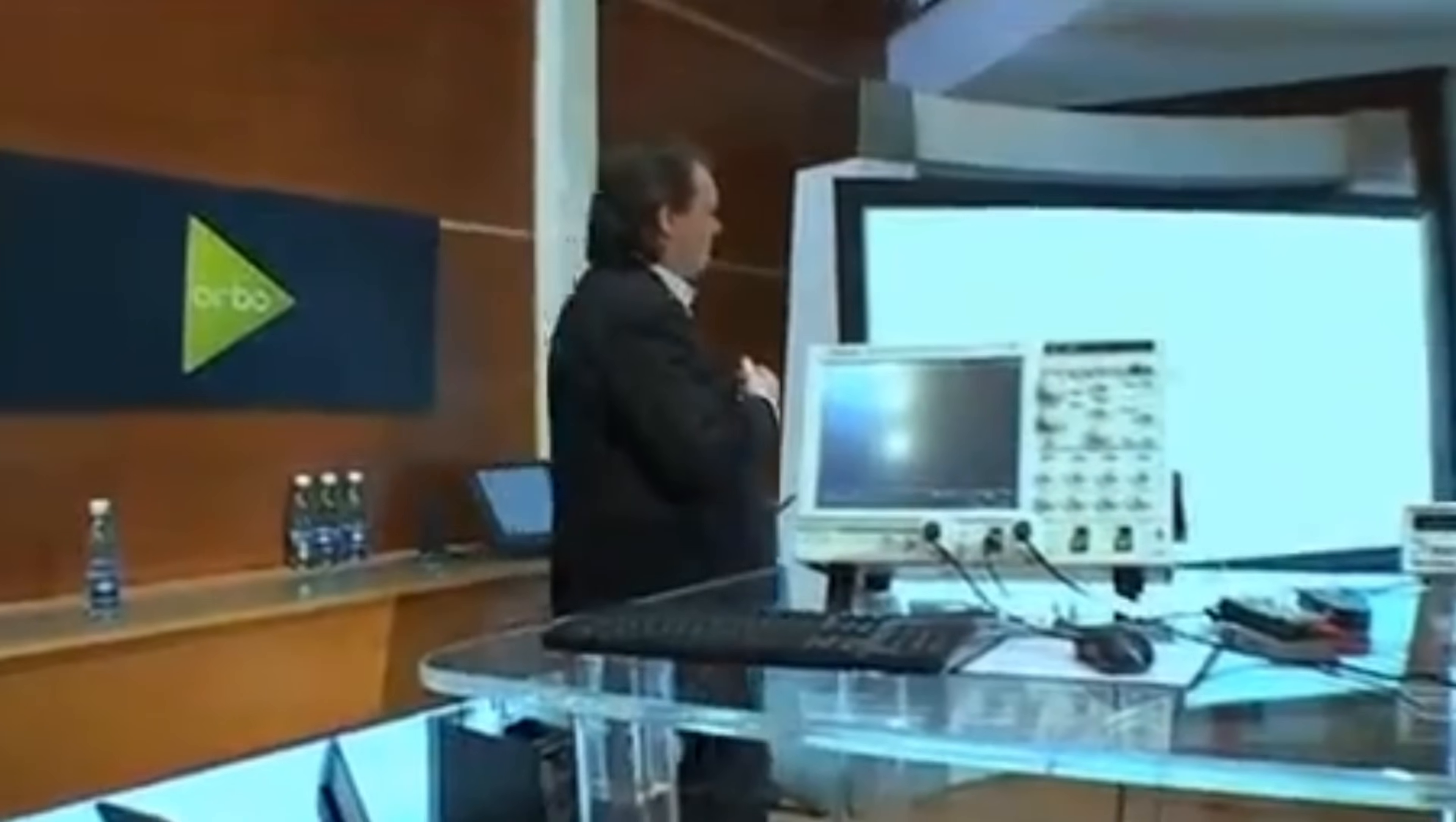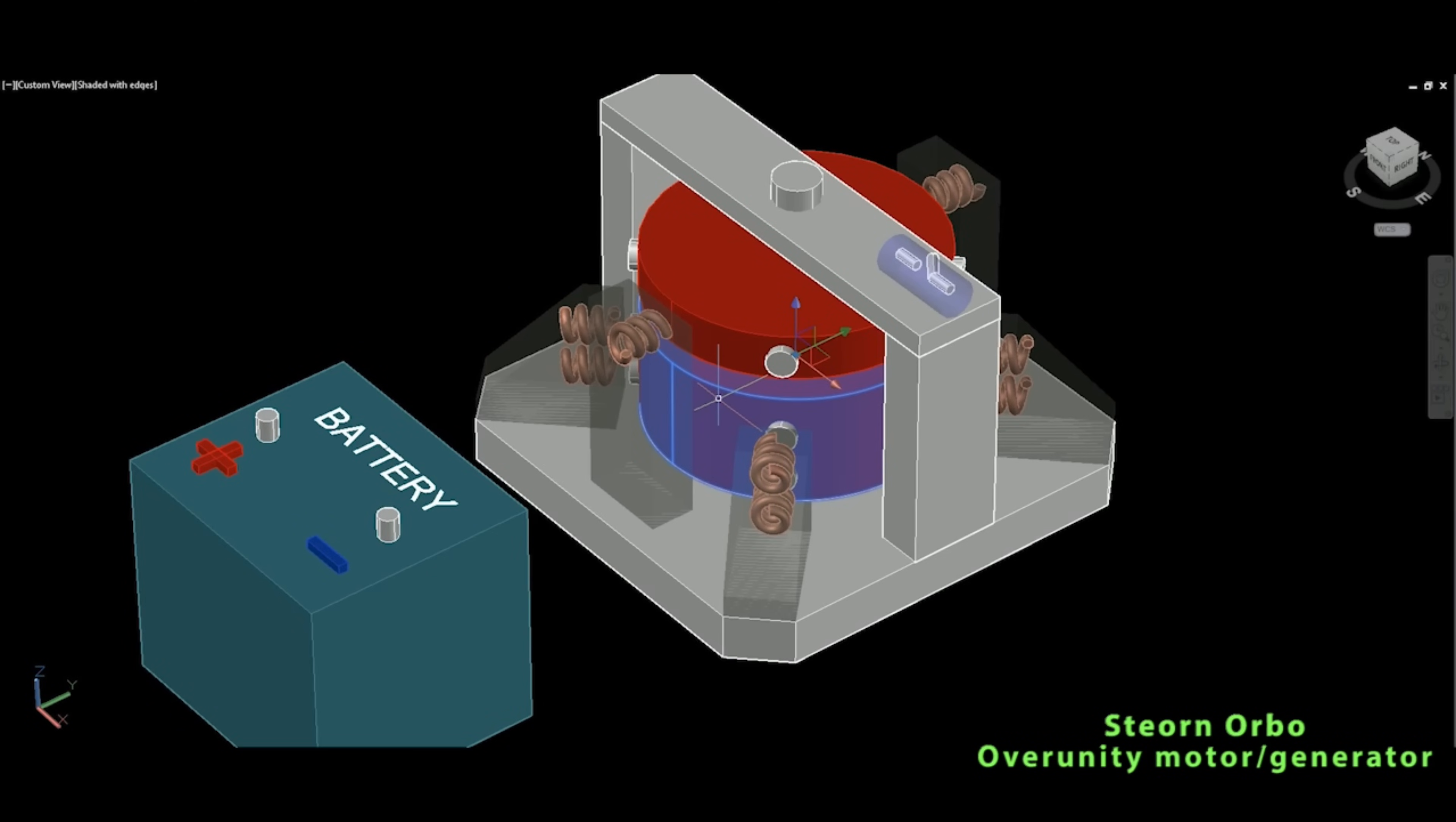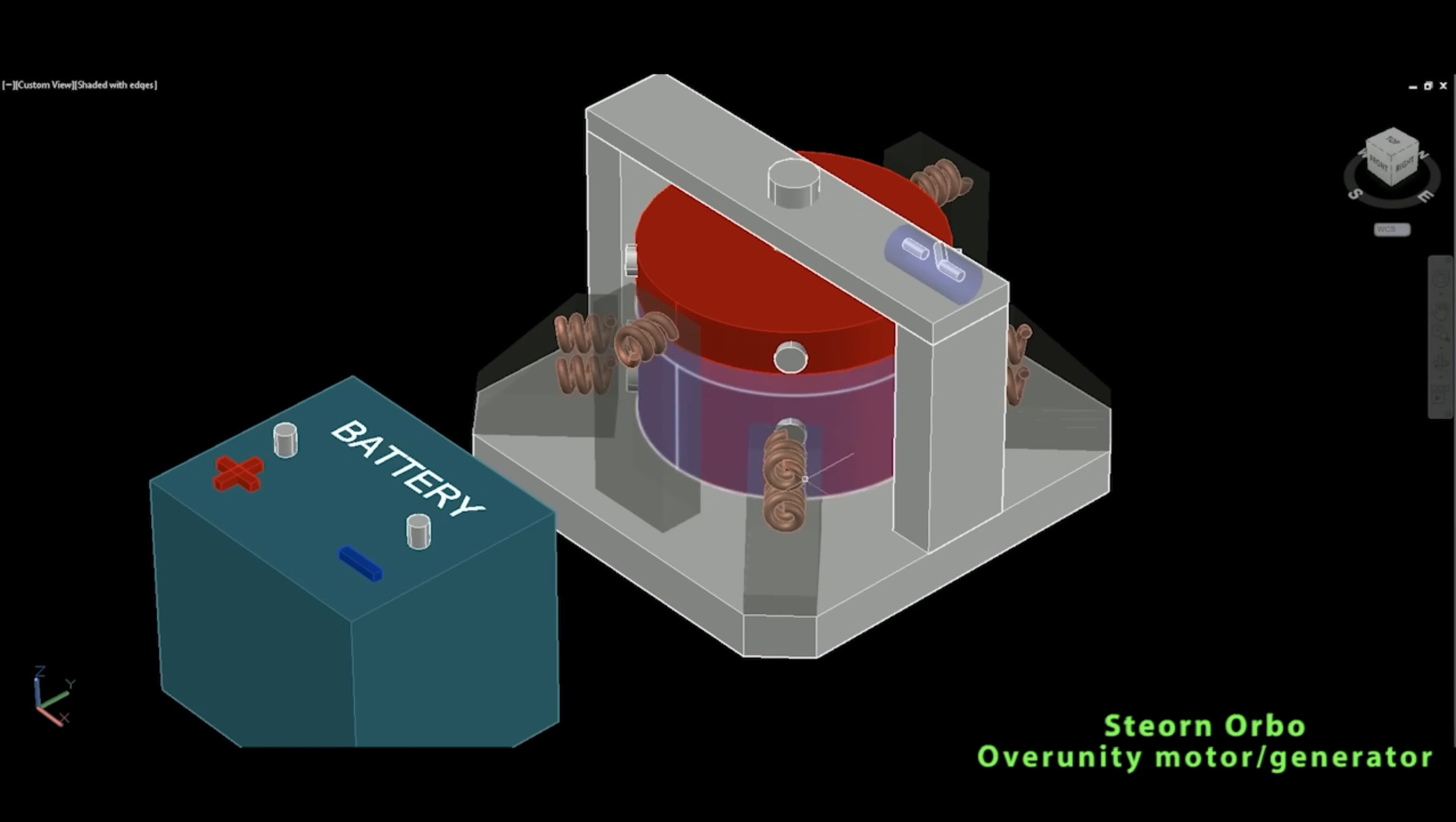It all began in the early 2000s when a young Irish entrepreneur named Sean McCarthy stumbled upon a revolutionary concept: a self-sustaining magnetic generator that could produce unlimited free energy. Fueled by his passion for innovation and a deep-rooted belief in the power of renewable energy, McCarthy founded a company called Stearn and set out to turn his radical idea into reality. In 2009, Stearn made a bold announcement that sent shockwaves through the scientific community.